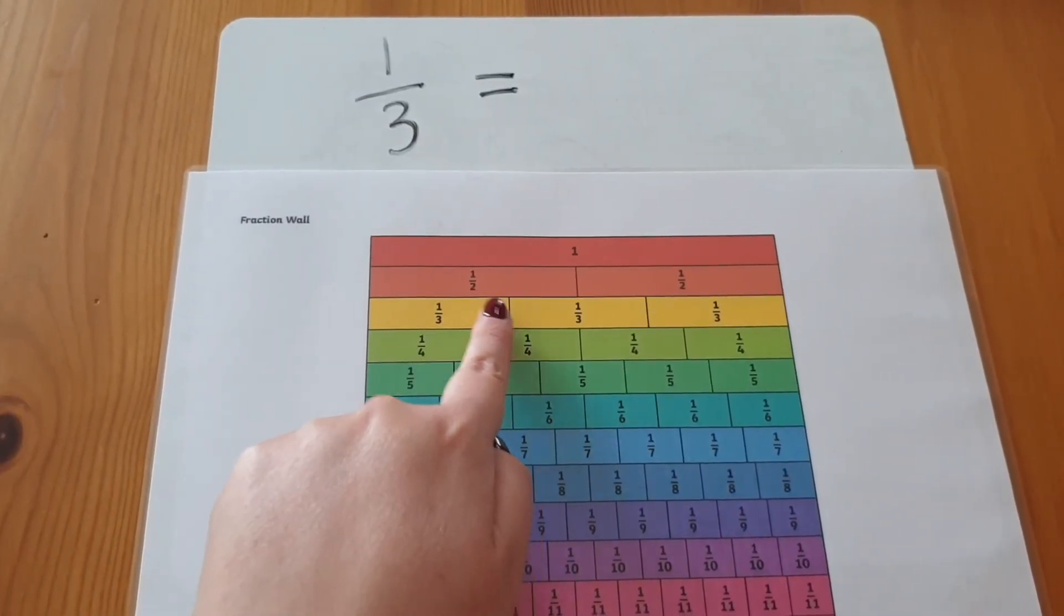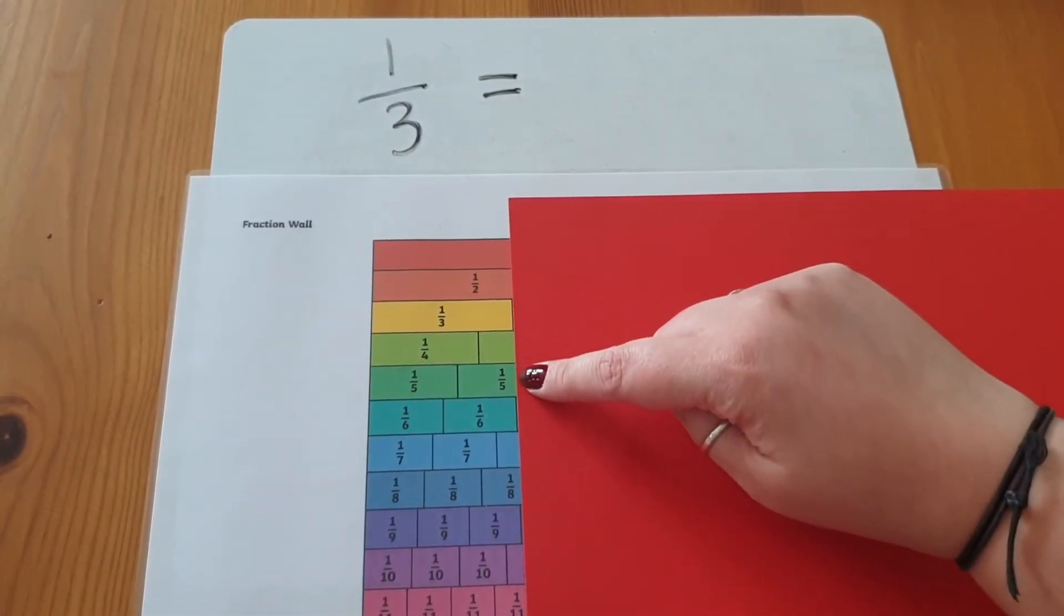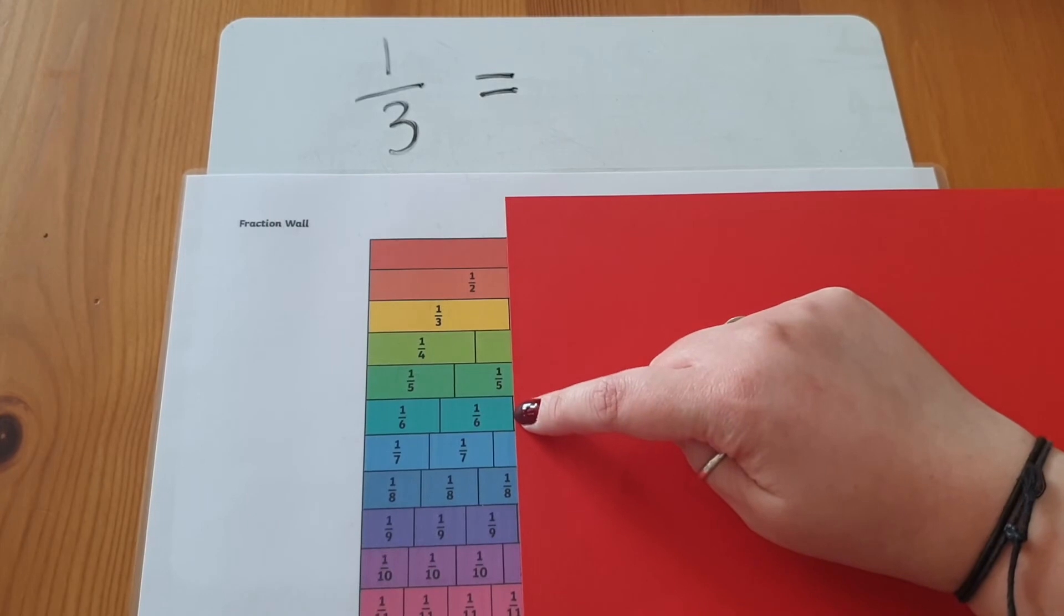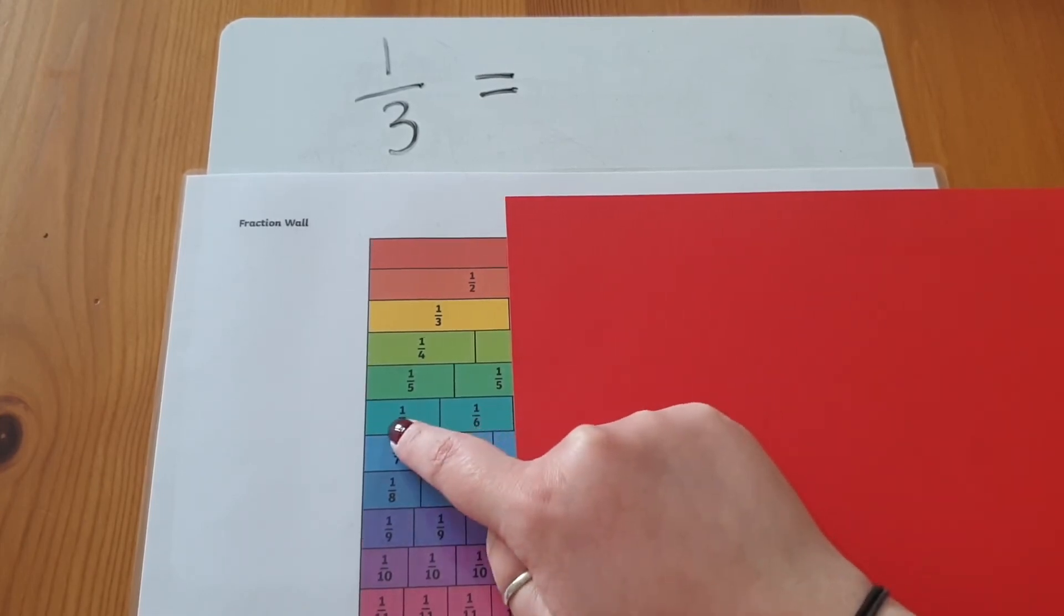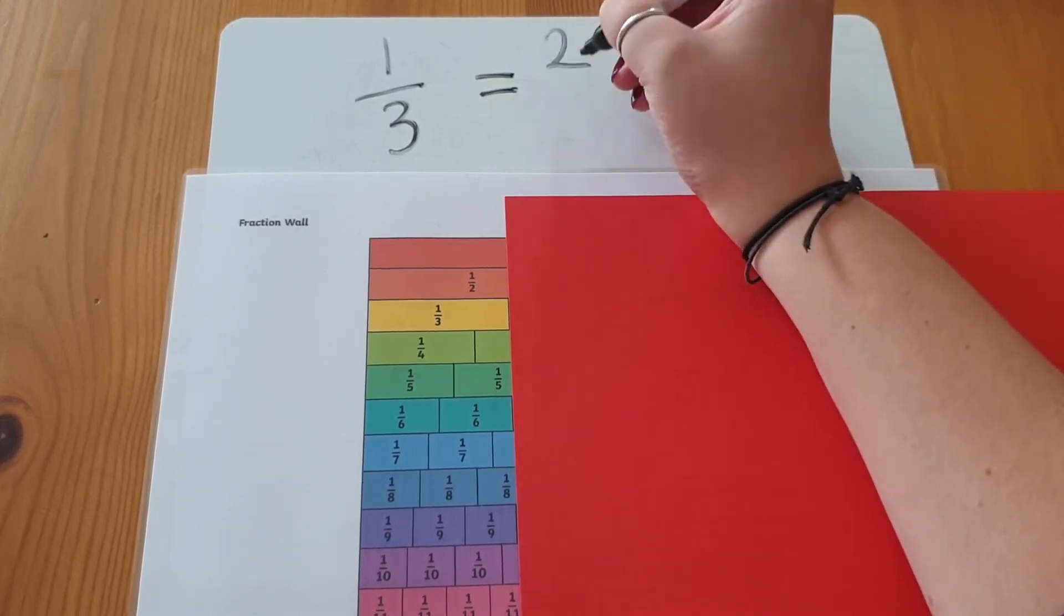So first of all, you need to find a third. Then follow that black line down. Here is another black line. I've got six and I've got two of them. So one third is equivalent to two sixths.